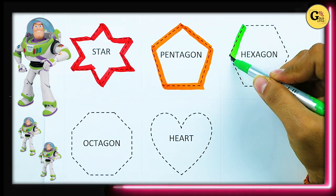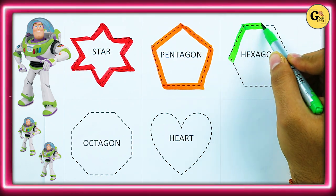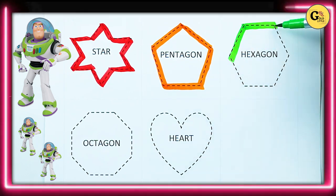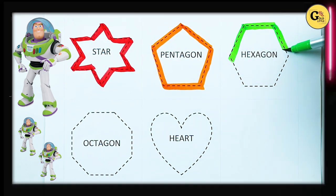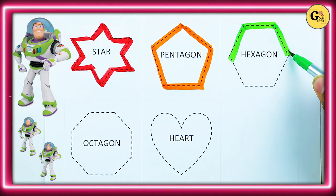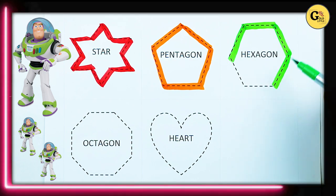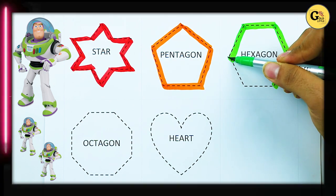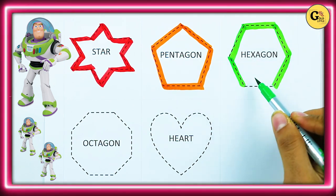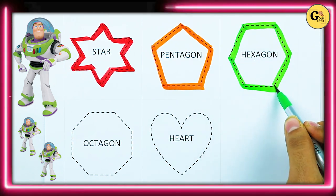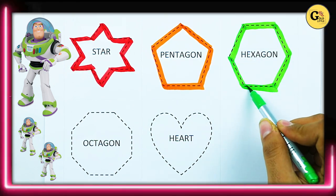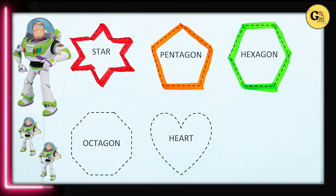Hexagon. One line, two line, three line, four line, five line, six line. It's a hexagon.